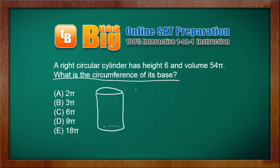The volume of this right circular cylinder is 54 pi, and the height is 6. We need to find the circumference of its base.